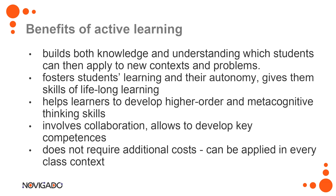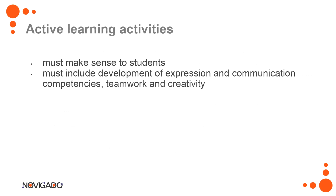Very often active learning doesn't require any additional cost — it can be done in any classroom, and it's mainly a change of mindset for the teacher. Active learning activities, to be effective, must make sense to the students, so they need to understand why they're doing certain things and what it is for. The learning goals and objectives need to be given to students first, so they can make sense of what they are doing. Secondly, it must include the development of communication, teamwork, and creativity by utilizing all higher-order thinking skills.